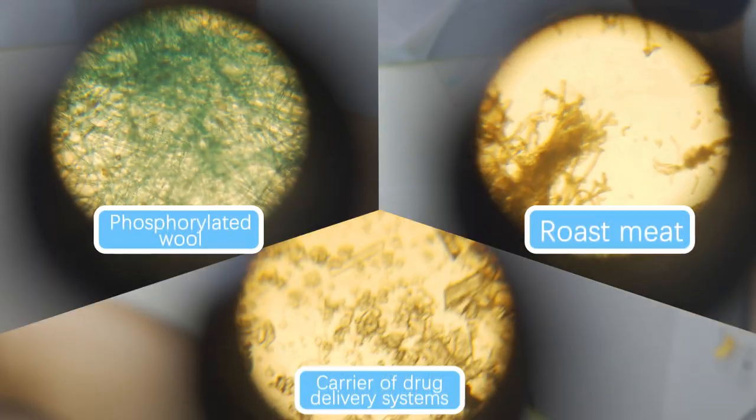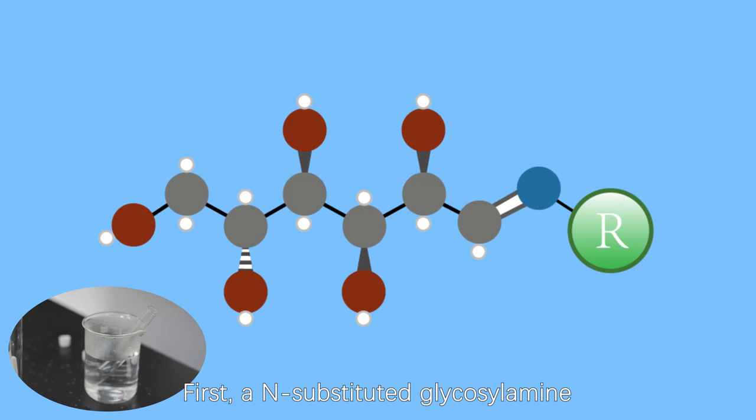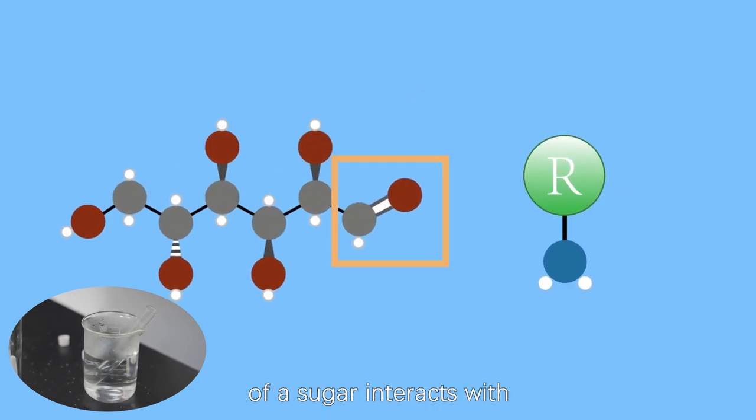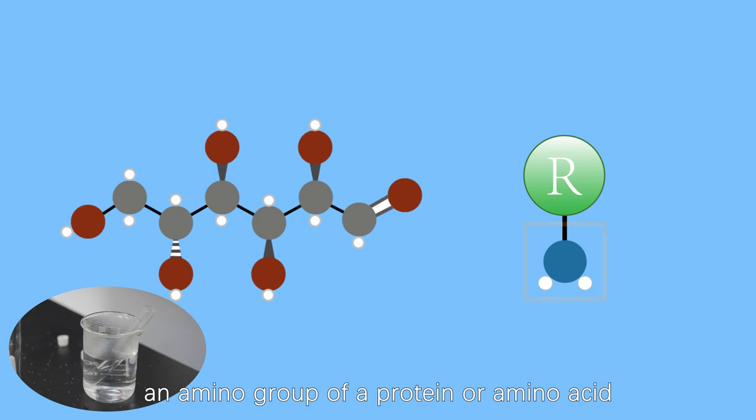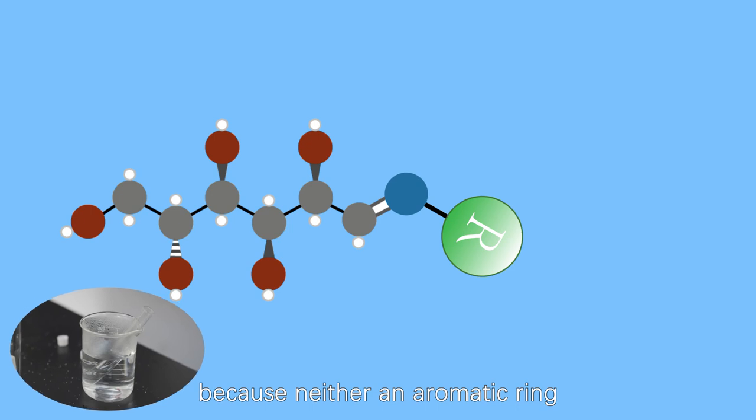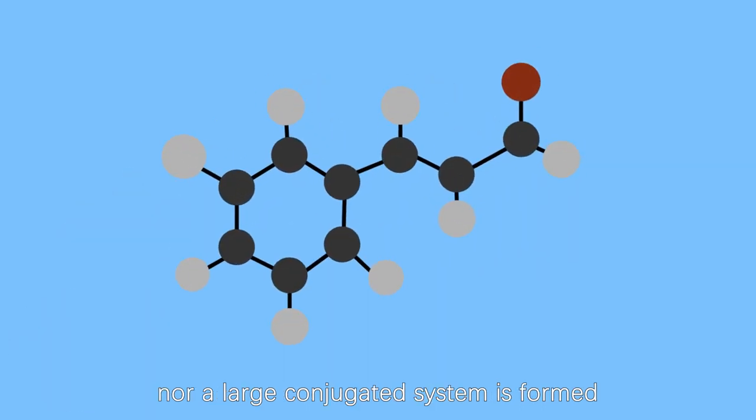To see how this works, let's take a closer look. First, a nitrogen-substituted glycosylamine is created when the carbonyl group of a sugar interacts with an amino group of a protein or amino acid. You won't see a color change in this step because neither an aromatic ring nor a large conjugated system is formed.